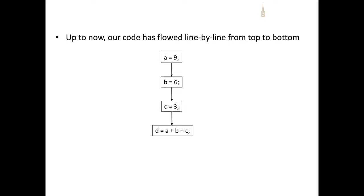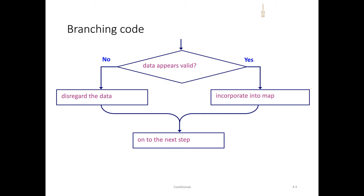Up until now, we've primarily worked with coding constructs in a sequential manner, where operations and each line of code executes in order from top to bottom. Branching allows for conditions to occur in the code, and given the condition, we can have a different outcome or different execution that occurs.